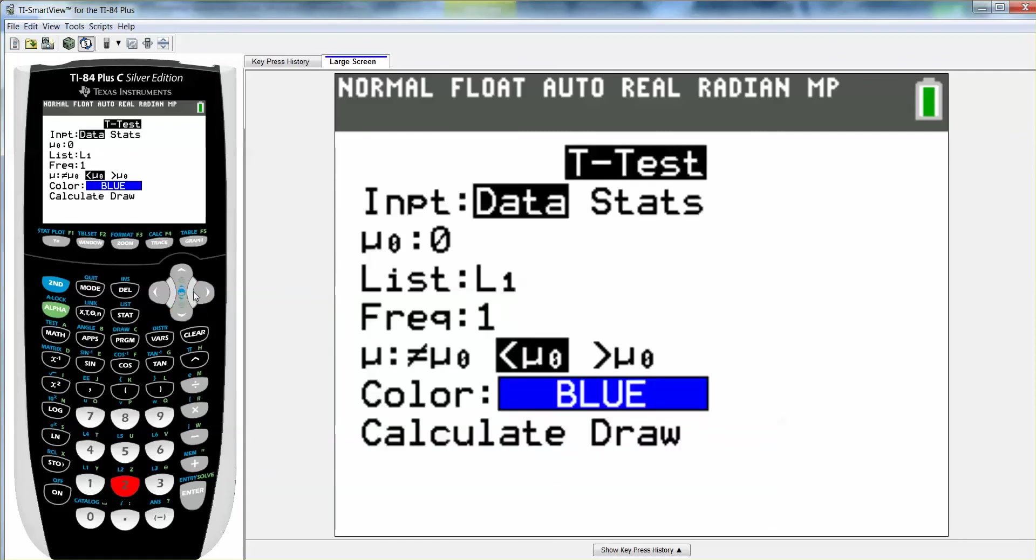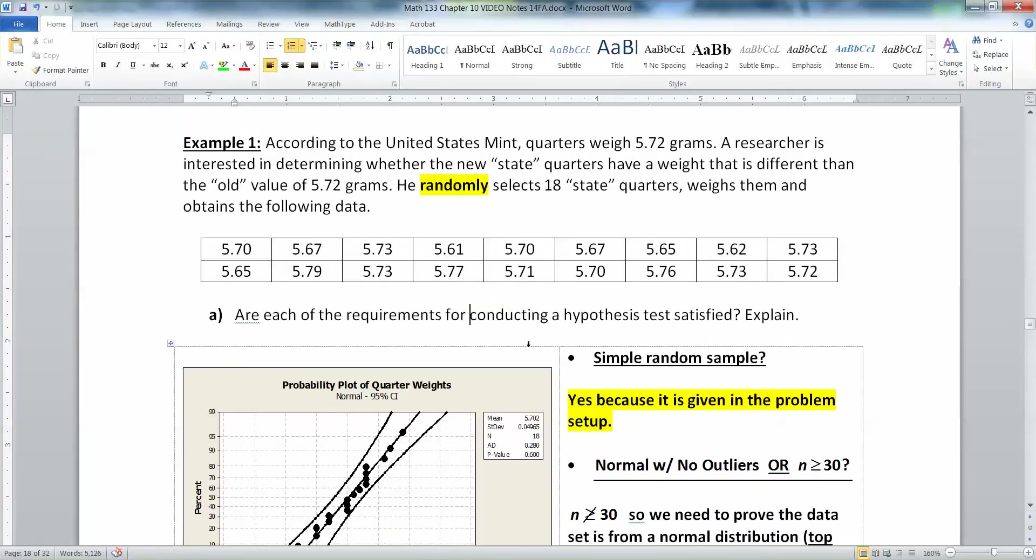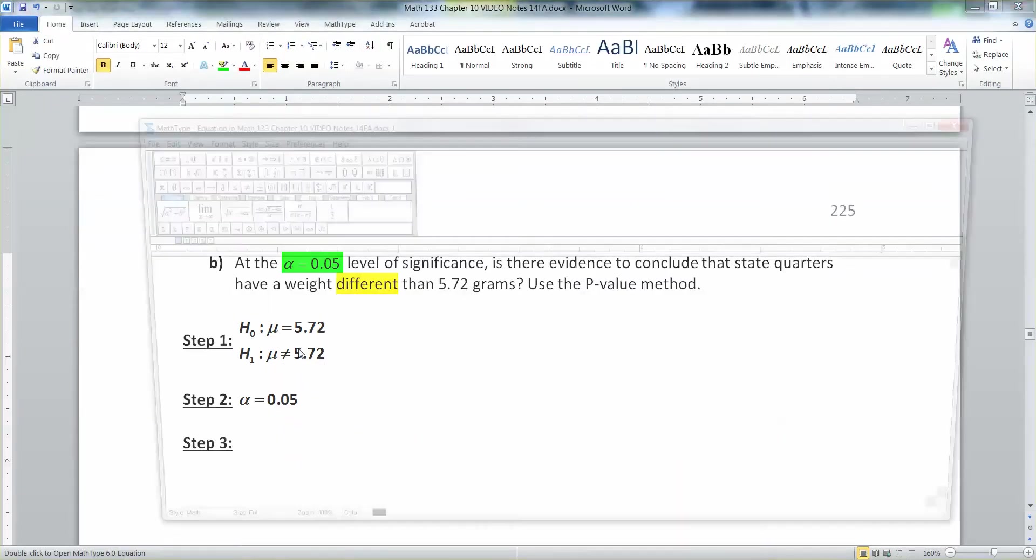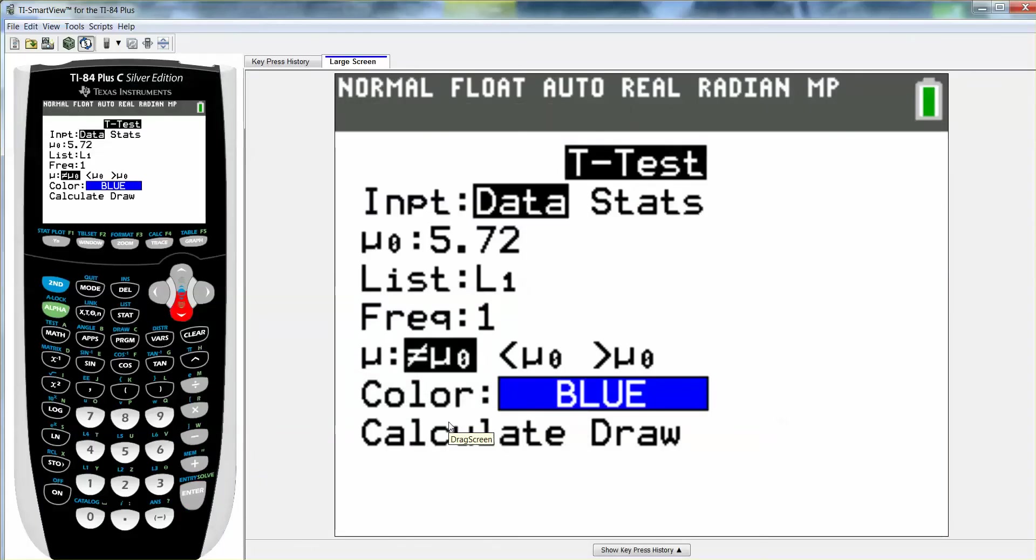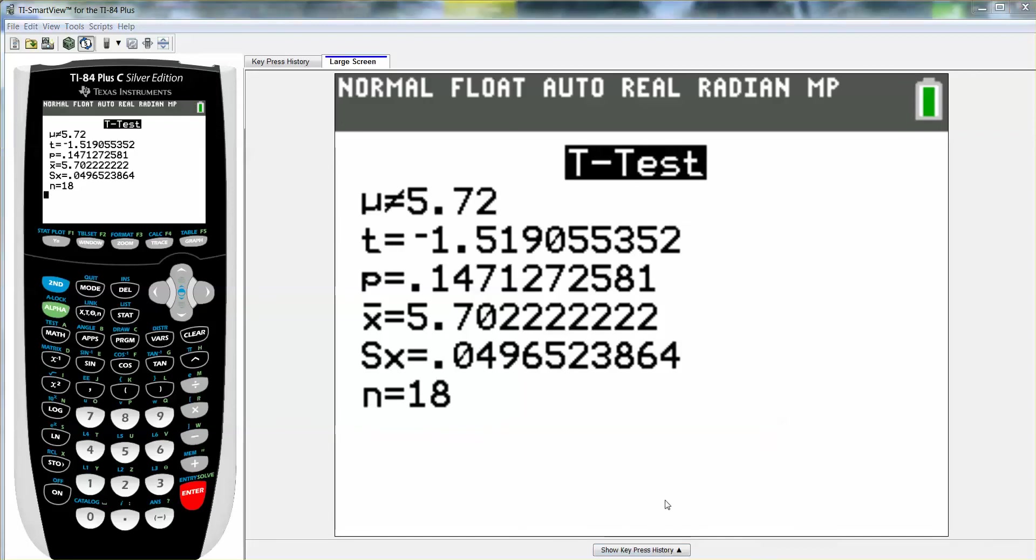I have all my data in L1. My mu zero is 5.72. My null hypothesis, right? And don't use your enter key to get down from one to the next. Use your down arrow. Because if you press enter, you'll always be picking the not equal to, although we actually want the not equal to in this particular one. Now, some people always get confused about this. What this is telling you is your alternative hypothesis. Your alternative was mu is not equal to mu zero, which was 5.72. So if you look at your alternative hypothesis, that's what you have. You have mu not equal to 5.72. So that's what you're picking. Right there. Then you go down to calculate and press enter.